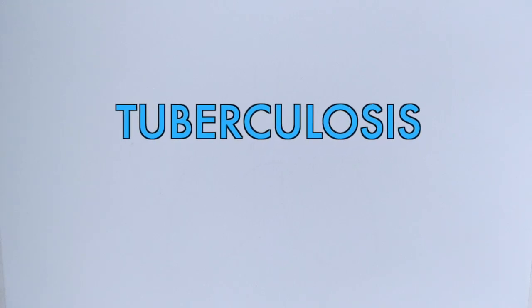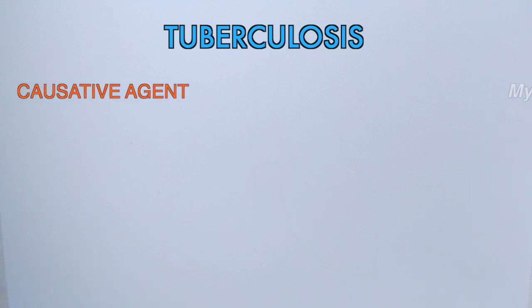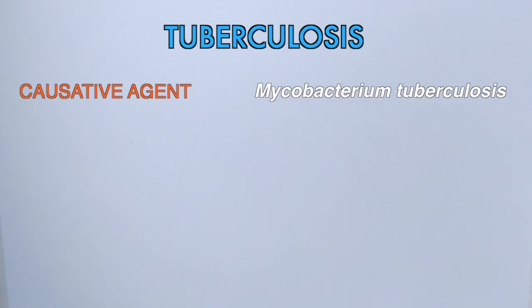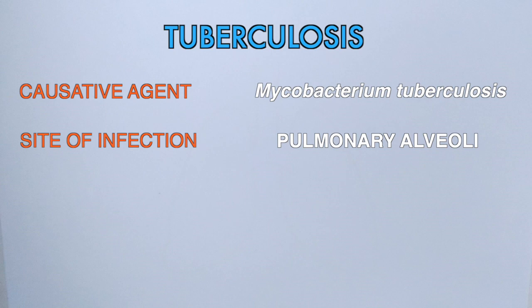In this video we will be discussing tuberculosis and its pathophysiology. Tuberculosis is an airborne infectious disease that mostly affects lung tissue. It can affect other tissues also, but it is most profound in lung tissue. Its causative agent is Mycobacterium tuberculosis, and for this bacteria the target tissue is lung tissue — specifically the pulmonary alveoli of the lungs.